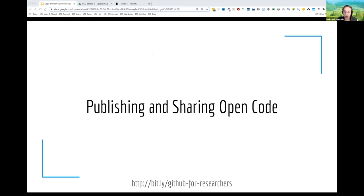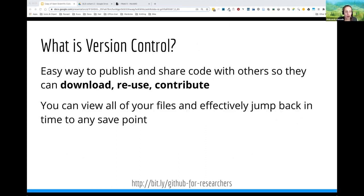So how do you go about publishing and sharing your open code? The first step is version control. Version control is a system that records changes to a set of files within a folder over time, so you can recall a specific version later. It gives you two things: it enables you to publish and share your code, and it gives you a way to backup and version control your code so you can always go back to a previous version — like a time machine for your code.